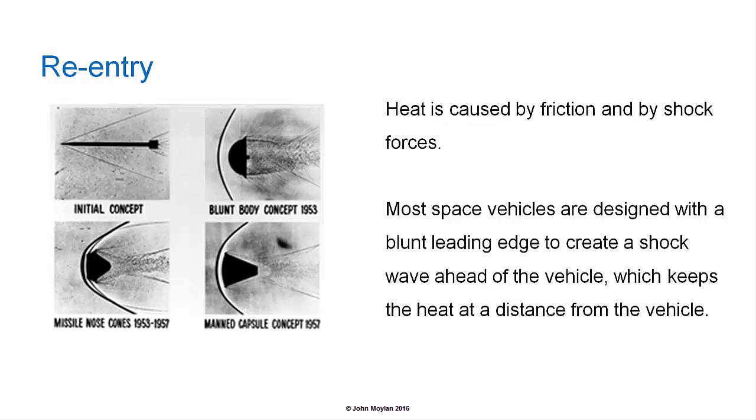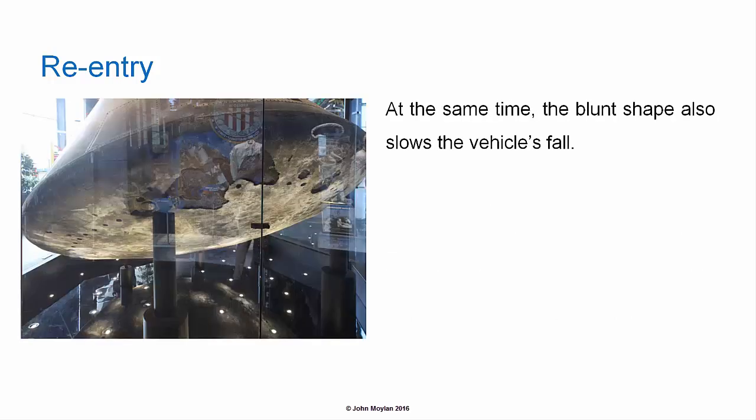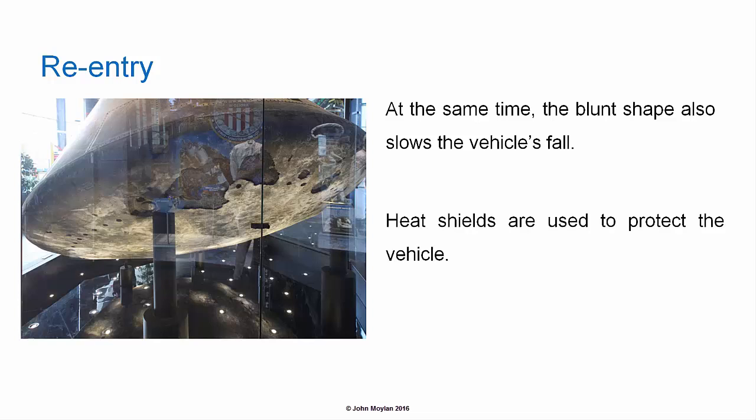The shockwave keeps the main heating away from the surface of the vehicle, because the main heating is associated with the shockwave itself. By moving the shockwave some distance in front of the vehicle, the heat is moved away from the skin of the vehicle. At the same time, the blunt shape also slows the vehicle's fall.